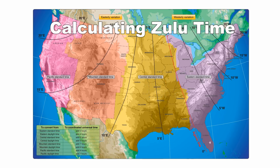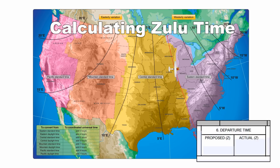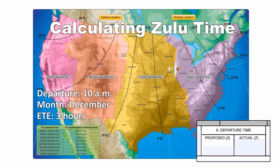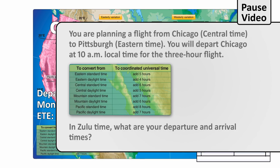Here's another one. You're in Chicago and want to file a flight plan for a trip to Pittsburgh. You'll need to specify your departure and arrival times in Zulu time. Chicago is in the central time zone and Pittsburgh is in the eastern time zone, so without Zulu time it could be a real mess. You've decided to depart at 10 a.m. local time on the 3-hour flight, and the month is December, so you'll be using standard time. Now pause the video and work the problem — when you have it figured out, press play to see the answer.